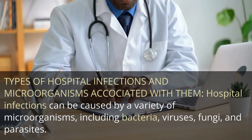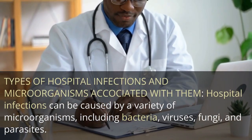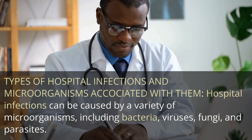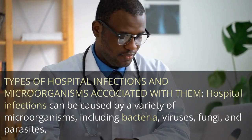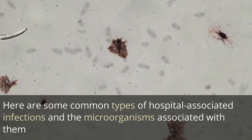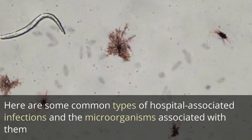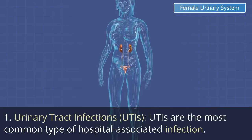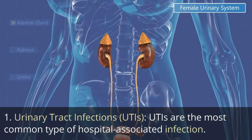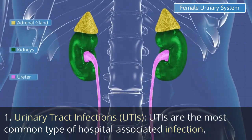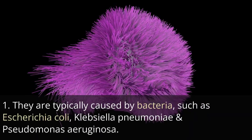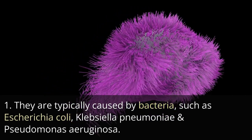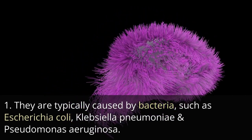Let's look at the types of hospital infections and microorganisms associated with them. Hospital infections can be caused by a variety of microorganisms, including bacteria, viruses, fungi, and parasites. The first type is urinary tract infections, or UTIs. UTIs are the most common type of hospital-associated infection, and they are typically caused by bacteria such as Escherichia coli, Klebsiella pneumoniae, and Pseudomonas aeruginosa.